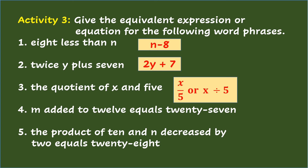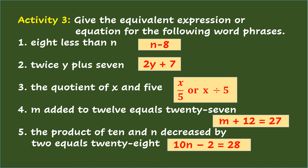Number 4: m added to 12 equals 27 — the answer is m plus 12 equals 27. Number 5: the product of 10 and n decreased by 2 equals 28 — the answer is 10n minus 2 equals 28.